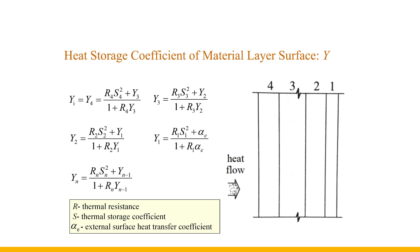Since the actual flat wall has finite thickness, the temperature fluctuation on the surface of the material layer is not only related to the thermal physical properties of the material itself, but also to the boundary conditions — meaning the thermal physical properties and heat dissipation conditions of other materials in contact with this layer. Therefore, the surface heat storage coefficient should be used for material layers of limited thickness.